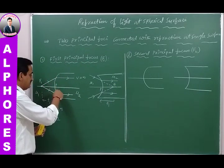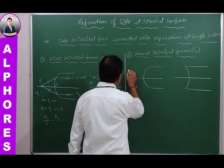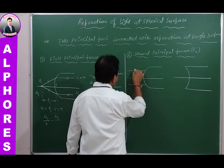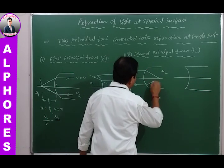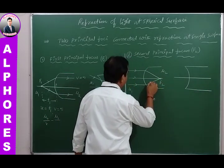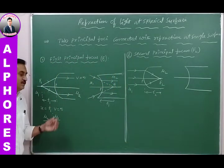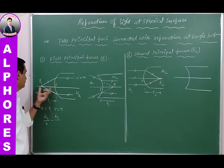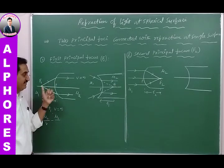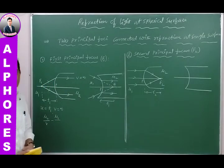For a convex spherical refracting surface, a parallel beam of light incident from the first medium converges to a point after refraction — that point is the second principal focus F₂. The convex surface has two focus points: the first principal focus, from which light diverges, and the second principal focus, towards which light converges.